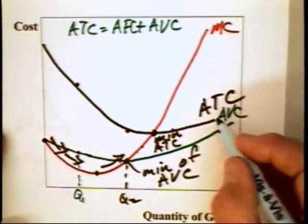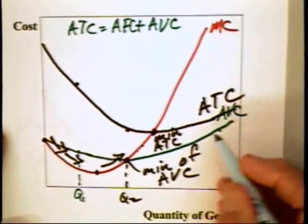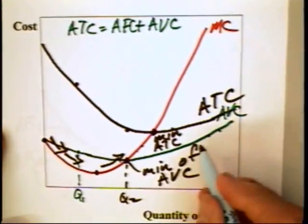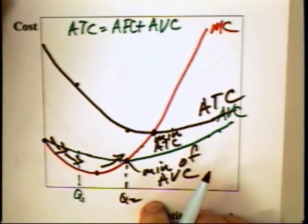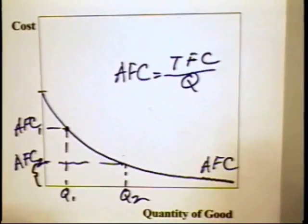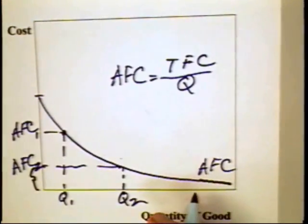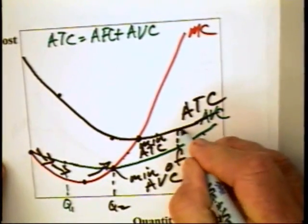Now, what we also know is that these two curves, the average total and the average variable cost curve, they must be converging toward one another. And we know that simply because in this graph, this average fixed cost is constantly declining. And if that's declining, then the difference, which is the average fixed cost, must also be declining.